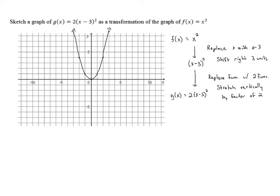Now let's take all the individual points on this graph and put them through these transformations. First, we need to shift this graph to the right 3 units. Every point on the graph, starting with the origin, gets shifted right 3 units. So the origin moves to the point (3, 0), and then (1, 1) moves to (4, 1), and (2, 4) moves to (6, 4).